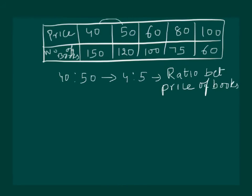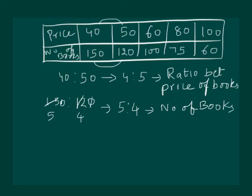Similarly, let us try to find the ratio between number of books. Then, this will come out to be 150 is to 120. Let us try and solve it, we will get 15, 12 and hence 5 is to 4 is the ratio for number of books. And, this clearly shows that ratio between price of the books and number of books are inverse of each other.